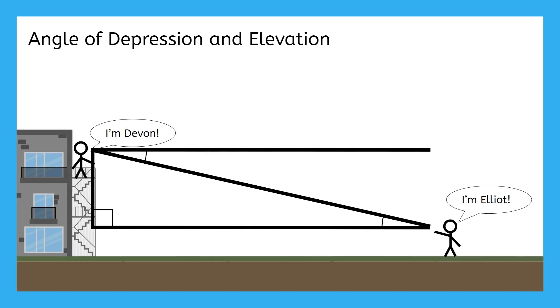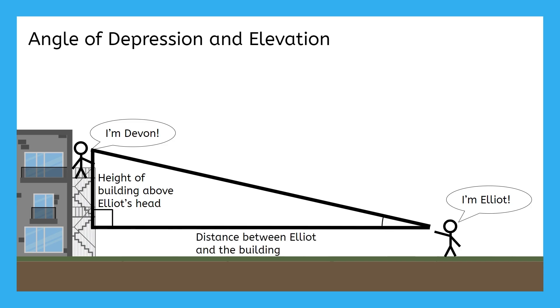like our Devin and Elliot scenario, it will probably just seem more logical to use this triangle, so that it's easier to visualize that the sides represent the height along the building and the distance between Elliot and the building.